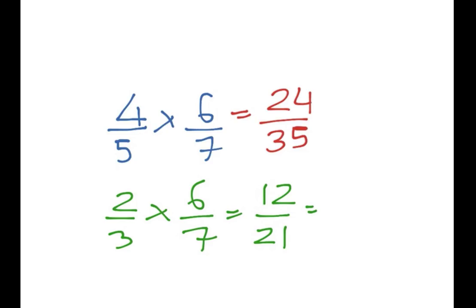And this time we know 12 and 21, they're both in the 3 times table. So we would divide the top and bottom by 3. And we end up with 12 divided by 3, which is 4. 21 divided by 3, which is 7. And that's our answer.